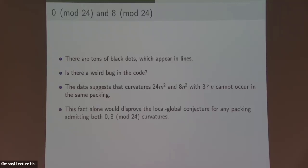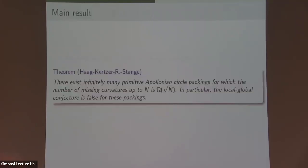Analyzing what this means: if you take a number of the form 24 times a square, and another number of the form 8 times a square where the square is not a multiple of 3, these cannot occur in the same packing — essentially what this picture was picking up. If this is true, the local-to-global conjecture is false for packings that admit this. If I have a packing with a curvature-8 circle, then I can't have 24 times a square — an infinite family that could occur but doesn't. The conjecture claimed only finitely many exceptions, but this is infinite.